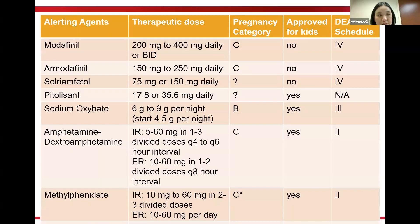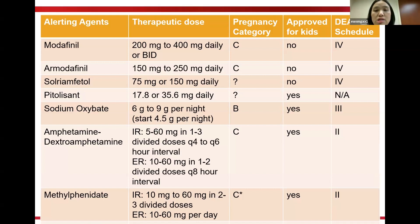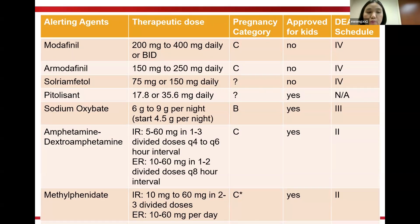Among prescription alerting agents, solriamfetol, pitolisant, and others have not had pregnancy categories assigned by the FDA, but most alerting agents are pregnancy category C except sodium oxybate, which is category B. Medications approved for pediatric use include pitolisant, sodium oxybate, Adderall, methylphenidate, and dextroamphetamine. DEA scheduling: modafinil and armodafinil are Schedule IV; pitolisant is not a controlled substance; sodium oxybate is Schedule III; amphetamine derivatives are Schedule II. Notably, methylphenidate is categorized as pregnancy category D in Australia but category C in the US.